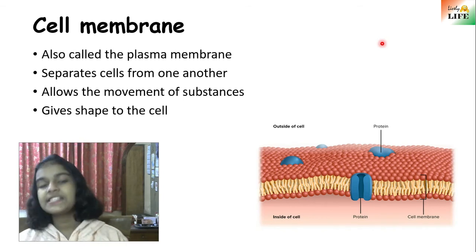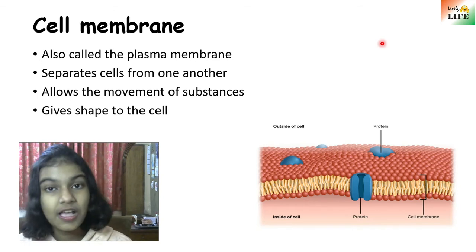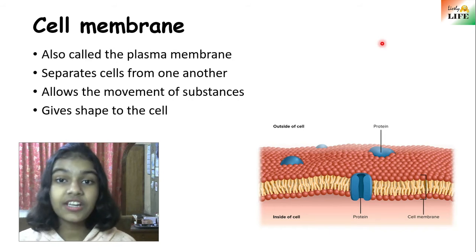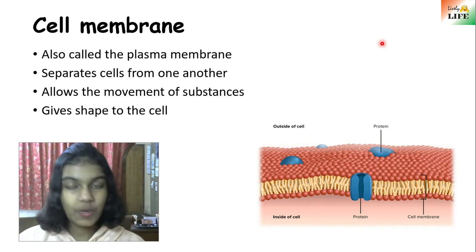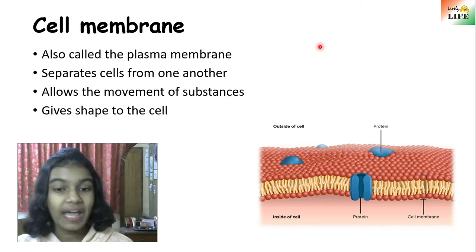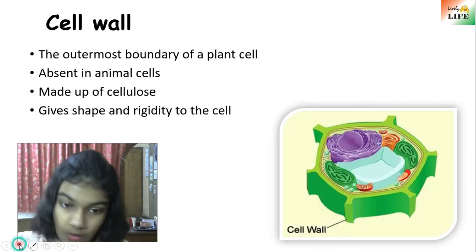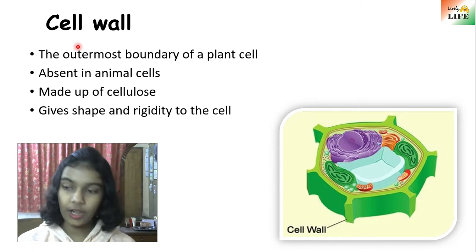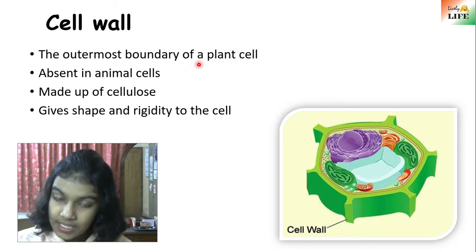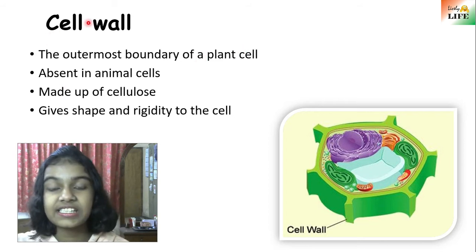Cell membrane is the outermost layer of animal cells. But why not plant cells? Because plant cells have another additional layer after the cell membrane, known as the cell wall. Plants do have cell membrane, but they also have this additional layer called the cell wall. The cell wall is the outermost boundary of a plant cell.